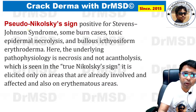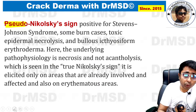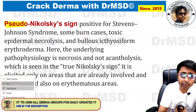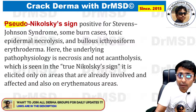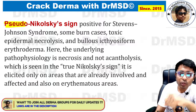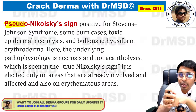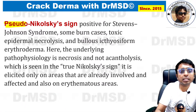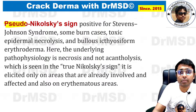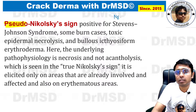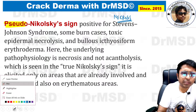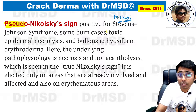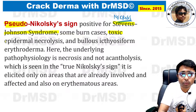There is one more term called pseudo-Nikolsky sign. It is called pseudo because the underlying mechanism is different — in this case there is also separation or peeling off of the superficial layers of the epidermis from the underlying dermis, but the underlying mechanism is not acantholysis; instead it is necrosis of the keratinocytes. The important examples you must remember are Stevens-Johnson syndrome and toxic epidermal necrolysis.